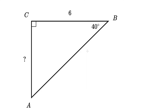So here we have a pretty typical problem. We have our unknown over here, which is what we're trying to solve — side AC. We're trying to find out how long it is. We're given two pieces of information: this angle right here is 40 degrees, and side BC is 6 units long.